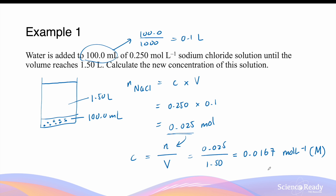We'll leave the final answer to three significant figures, because out of all the numbers used in the calculation, the fewest number of significant figures is three — from 0.250 and 1.50.